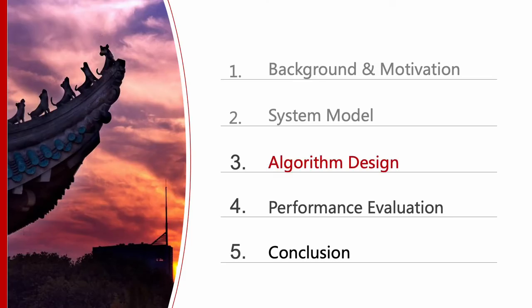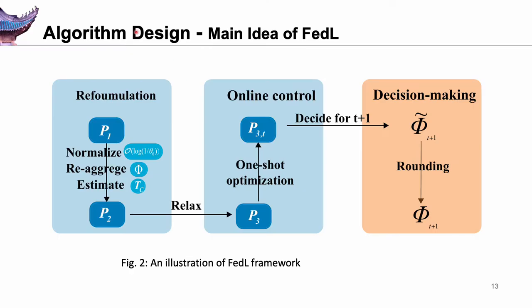Faced with these challenges, our algorithm design is as follows. The main idea of our algorithm framework: we first convert nonlinear terms into linear terms and re-aggregate control decisions. After that, we estimate the range of stopping efforts for a given budget. Finally, we reformulate the original problem to a convex program. To solve P2, we derive the relaxation. By solving each one-shot problem, the selection and iteration decisions can be obtained. Based on current inputs and current decisions, the algorithm predicts fractional decisions for the next aggregate through a novel online learning method.